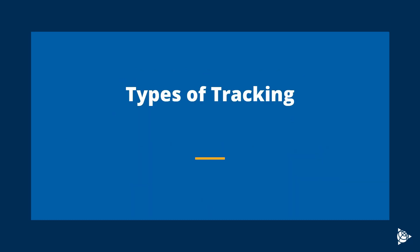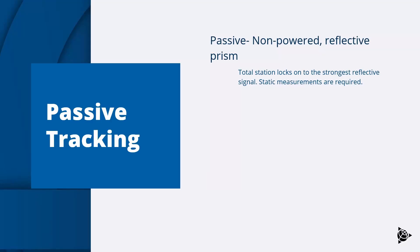The following slides will discuss the types of tracking available. Passive tracking uses a non-powered reflective prism, tape, or material. The total station locks on to the strongest reflective signal and a static measurement is required.